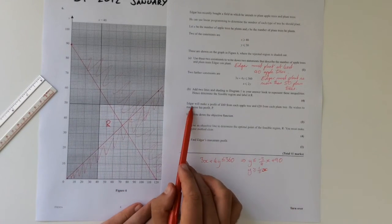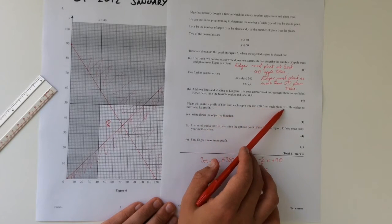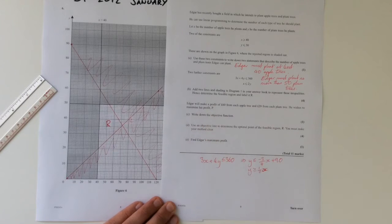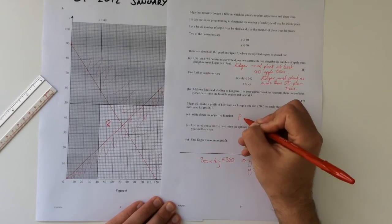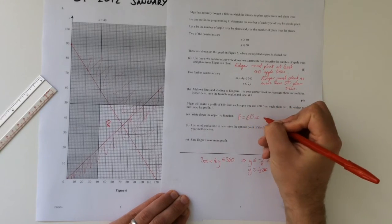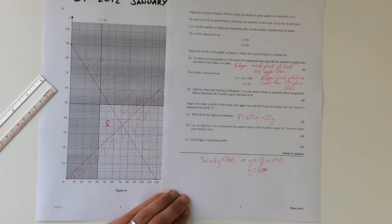So, Edgar will make a profit of 60 pounds from each apple tree and 20 pounds from each plum tree. He wishes to maximize his profit. Write down the objective function. So, his profit will equal 60 times the number of apple trees and 20 times the number of plum trees. Nice and straightforward there.